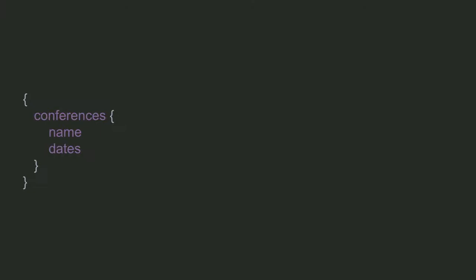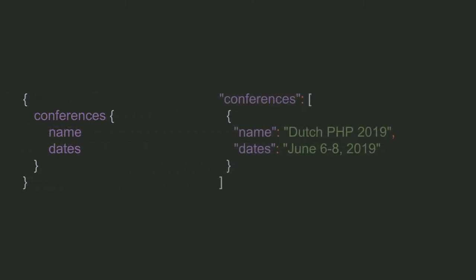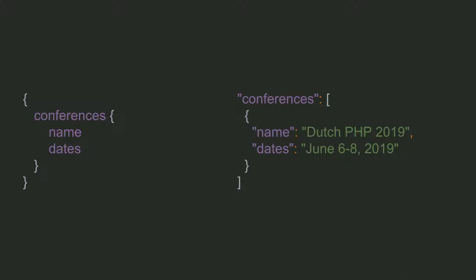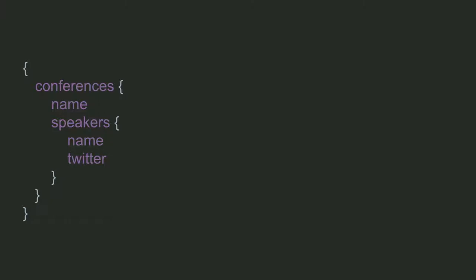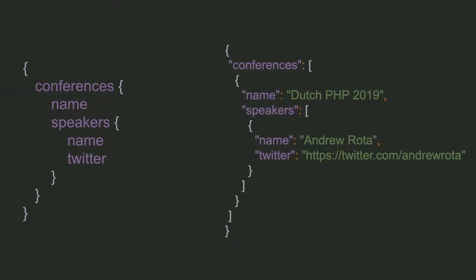GraphQL queries look something like this. Using a loose demo application for this talk, you can imagine requesting PHP conferences and the speakers at those conferences. A query might look a little familiar — maybe it looks like JSON. And that's because it's supposed to. It returns JSON data in exactly the shape you requested. A GraphQL query is essentially just a JSON data structure without the values. You can also request nested values. If I want to request conferences as well as a sub-resource like speakers, I can do that and get the data exactly in the shape I requested.